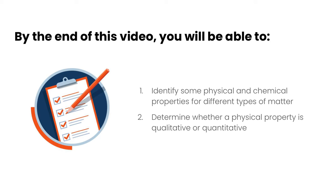In this video we're going to take a look at physical and chemical properties of matter. By the end of this video you'll be able to identify some physical and chemical properties for different types of matter and also be able to determine whether a physical property is qualitative or quantitative.